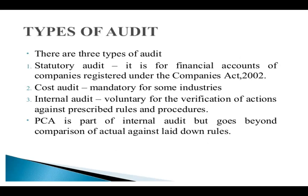Second is the cost audit, which is mandatory for some industries. Here we check whether the standard budgeted cost has been exceeded or remains within the preset limit. Third is the internal audit, which is voluntary and is for the verification of actions against prescribed rules and procedures. It includes evaluation of the internal organization — employees and other internal stakeholders. PCA is a part of internal audit but goes beyond comparison of actuals against laid-down rules.